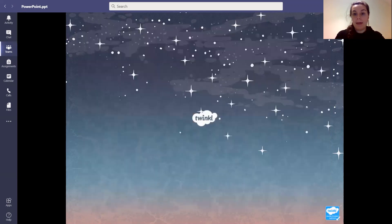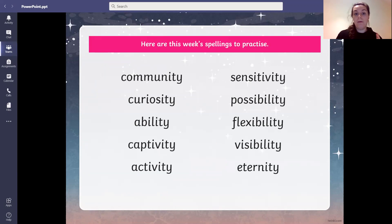Here are our spelling words. A community is a group of people. Curiosity is when you are curious about something, you want to know something more. Ability is when you are able to do something, you have the ability to do something. Captivity is when you are captured, hence captive as well. It's when you are in a prison or somewhere where you're held captive. Activity, when you're doing something, doing an activity like spelling or reading or football.